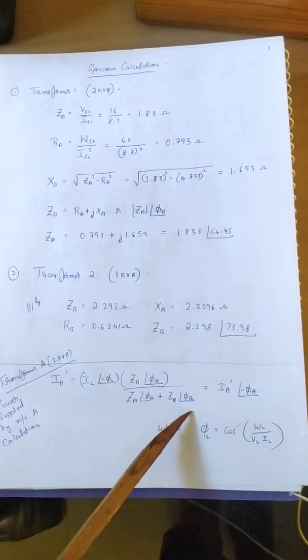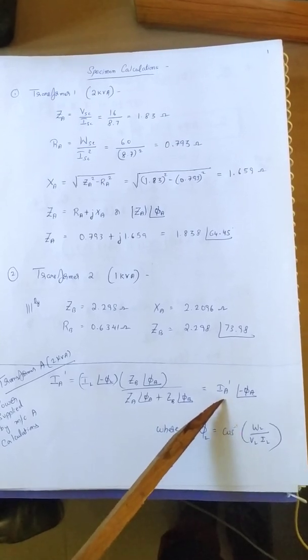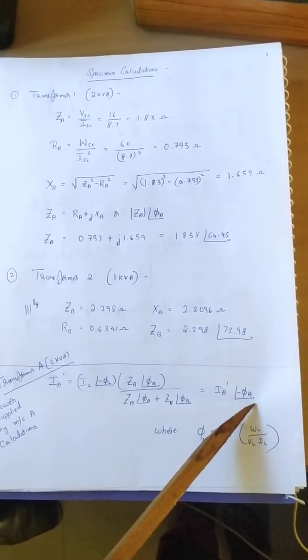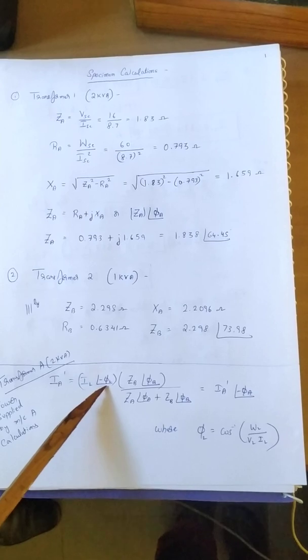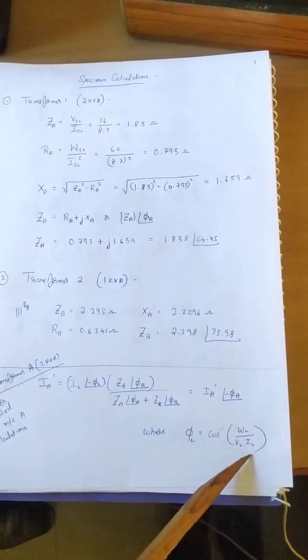This has to be expressed in polar form so we can represent this as magnitude of current at an angle minus phi A. In this expression we have phi L that is obtained by cos inverse of WL divided by VL IL.